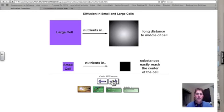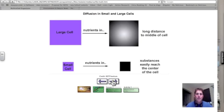What we see in this picture is diffusion in small and large cells. So what's happening here is I have a large cell here and a small cell there, you can tell by the words large cell and small cell. But what we're trying to do, if I have a cell, in order to live I must get nutrients to the inside of this cell.